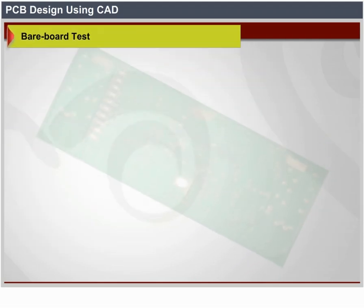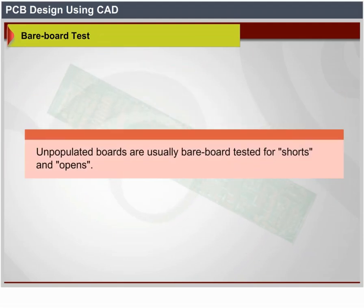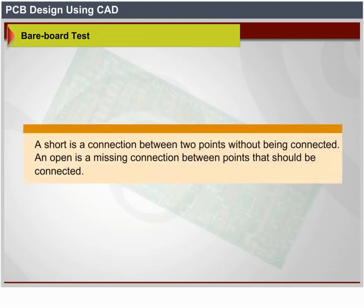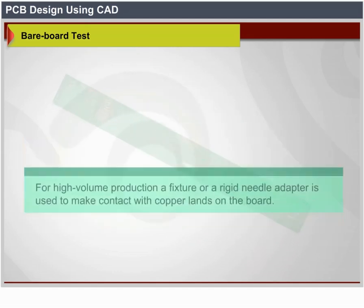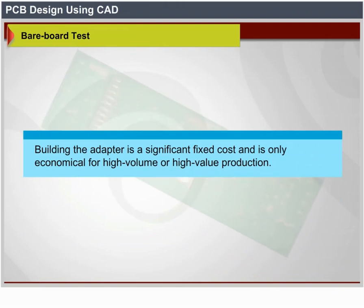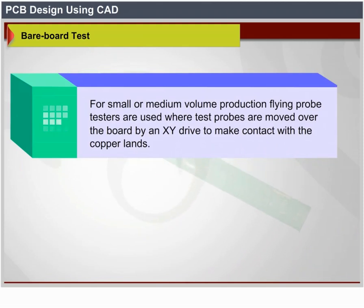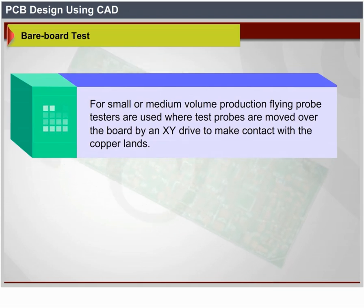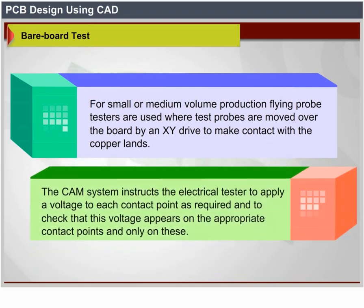Bare board test: unpopulated boards are usually tested for shorts and opens. A short is a connection between two points that should not be connected; an open is a missing connection between points that should be connected. For high-volume production, a fixture or rigid needle adapter is used to make contact with copper lands on the board. For small or medium volume production, flying probe testers are used, where test probes are moved over the board by an XY drive. The CAM system instructs the electrical tester to apply a voltage to each contact point and check that this voltage appears on the appropriate contact points only.